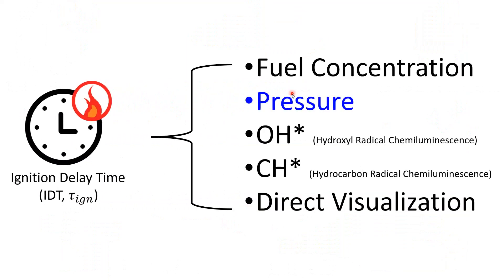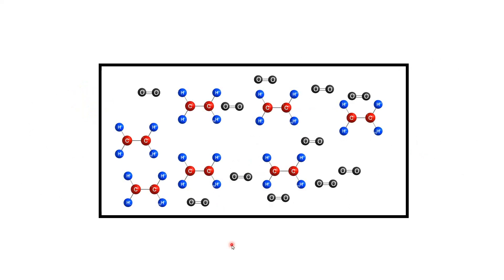I've already mentioned one way to determine the ignition delay time, which is the pressure. There are at least four other ways that I'm aware of to determine ignition delay time, including watching fuel concentration as a function of time, watching the hydroxyl radical or OH star via chemiluminescence. And chemiluminescence is just a fancy term for chemical luminescence. It's basically a chemical giving off light. You can also look at hydrocarbon radical chemiluminescence. And also you can just point a camera at the flame and directly visualize ignition happening.